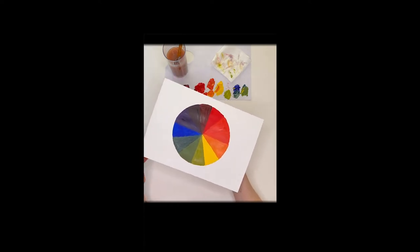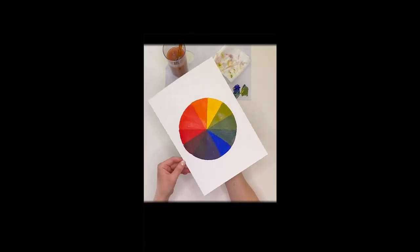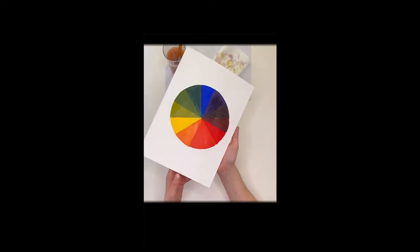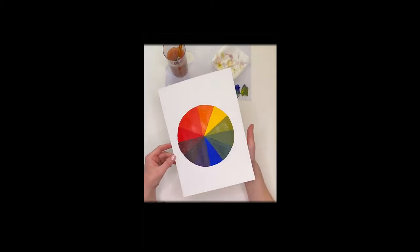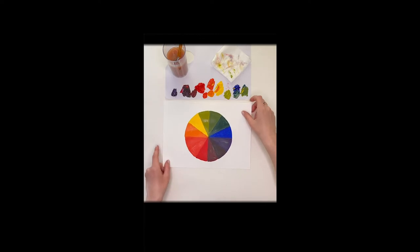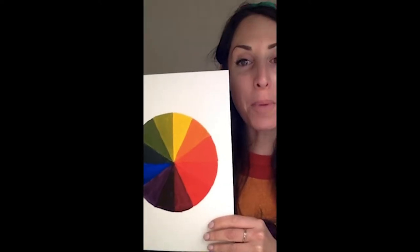So the great thing about color wheels is that you can have all the colors pinned on the back of your studio, on the back of your workplace, so you've always got a reference to color and you know which ones you can mix, which ones you can't, which ones complement each other.